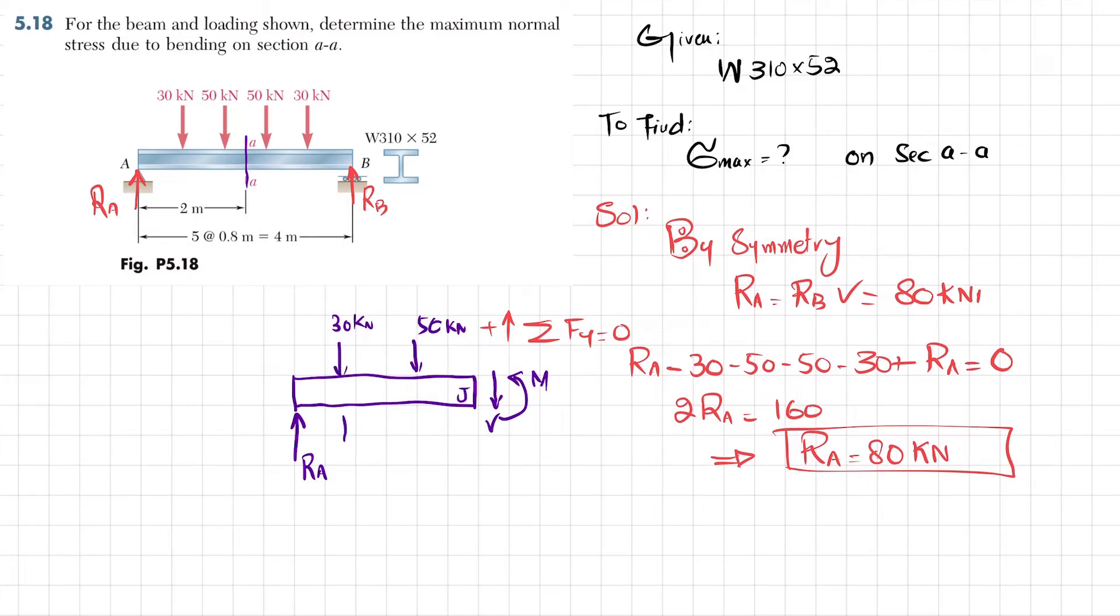The distance between this force and this is 0.8, so this is 0.8. This is again 0.8. And this remaining distance will be 0.4, because you can see that this is the half and total is 0.8, so this is 0.4.